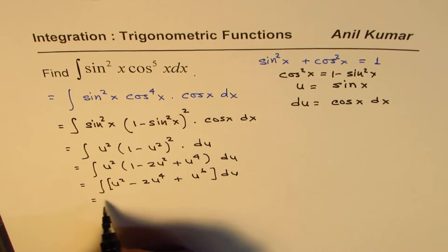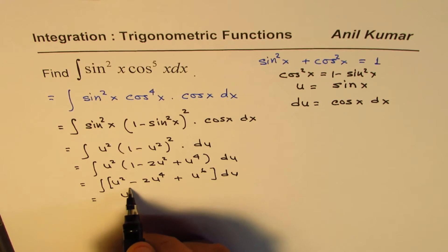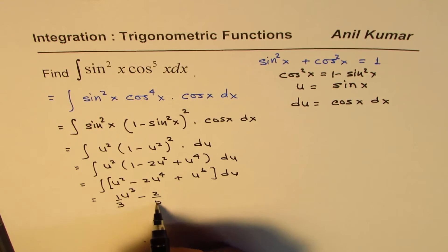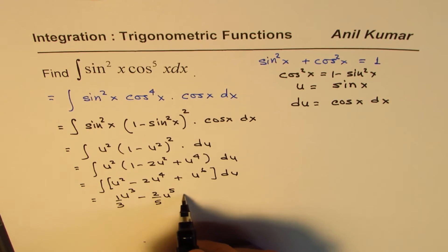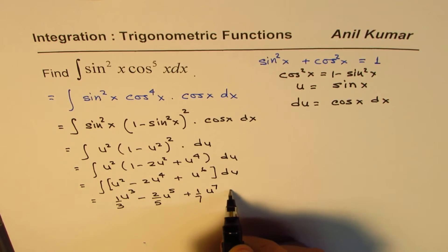And there's a polynomial with powers, integration will be u cube, 1 third, minus 2 over 5, u to the power of 5, plus 1 over 7, u to the power of 7, plus c.